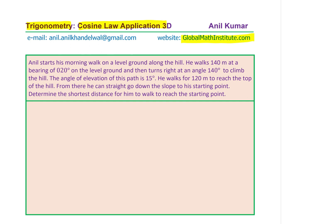The question is: Anil starts his morning walk on a level ground along the hill. He walks 140 meters at a bearing of 020 degrees on the level ground, and then turns right at an angle of 140 degrees to climb the hill. The angle of elevation of this path is 15 degrees. He walks for 120 meters to reach the top of the hill. From there, he can straight go down the slope to his starting point. Determine the shortest distance for him to walk to reach the starting point.